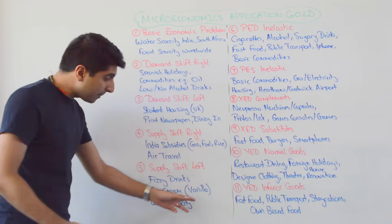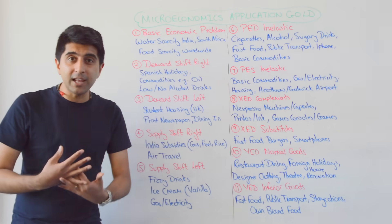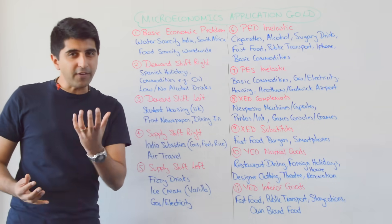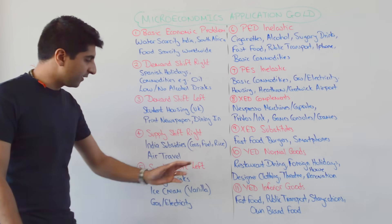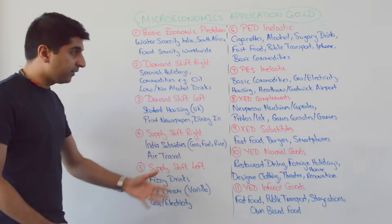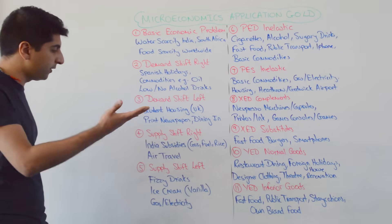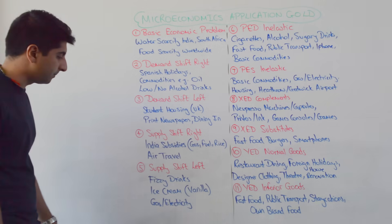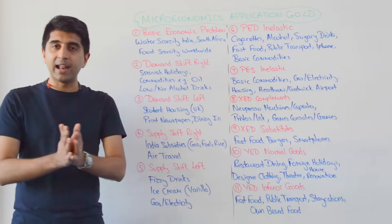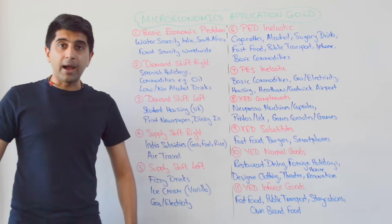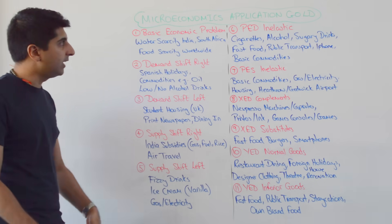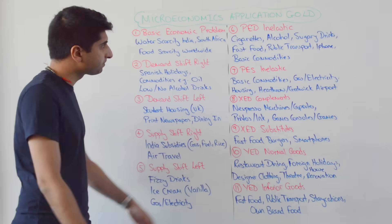If we look at ice cream, in particular vanilla ice cream — the price of vanilla has shot up recently, a very high increase, increasing the cost of producing vanilla ice cream and increasing prices. Also gas and electricity supply has shifted left. Weather issues have really hit the supply of gas and electricity, increasing wholesale prices.